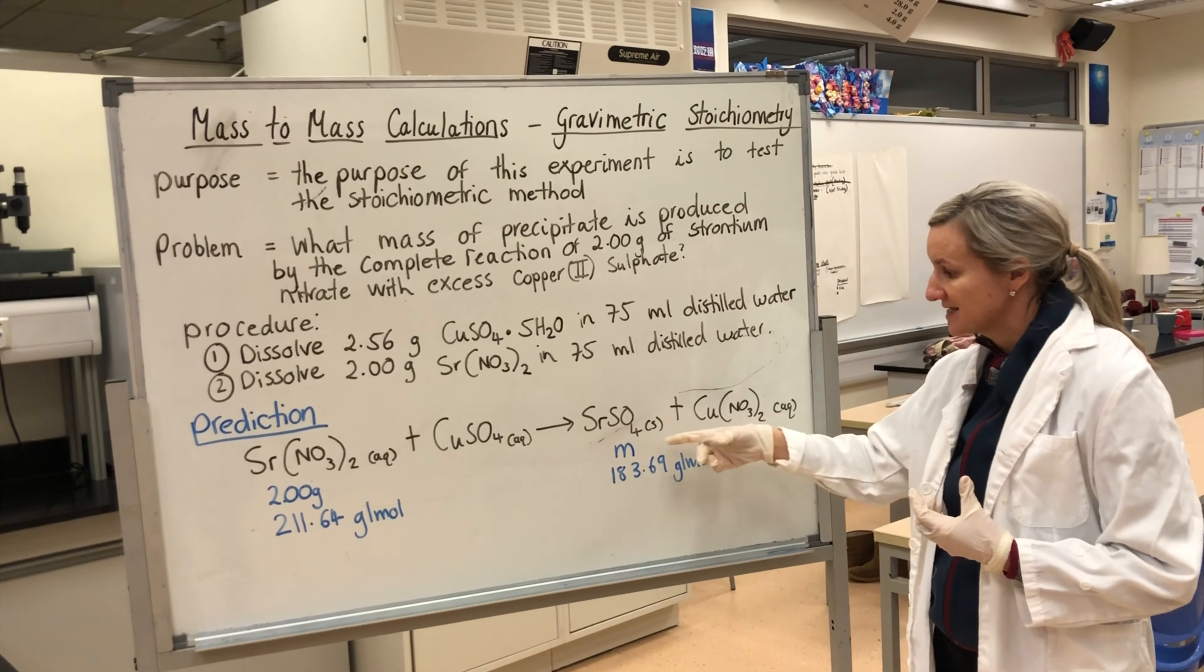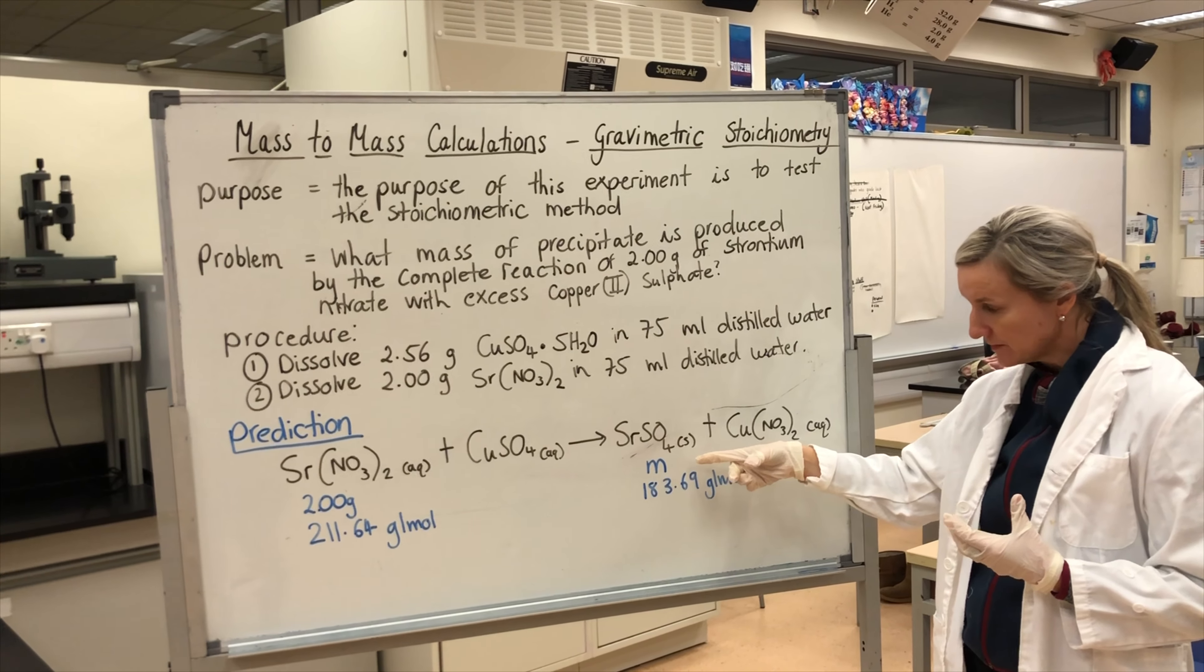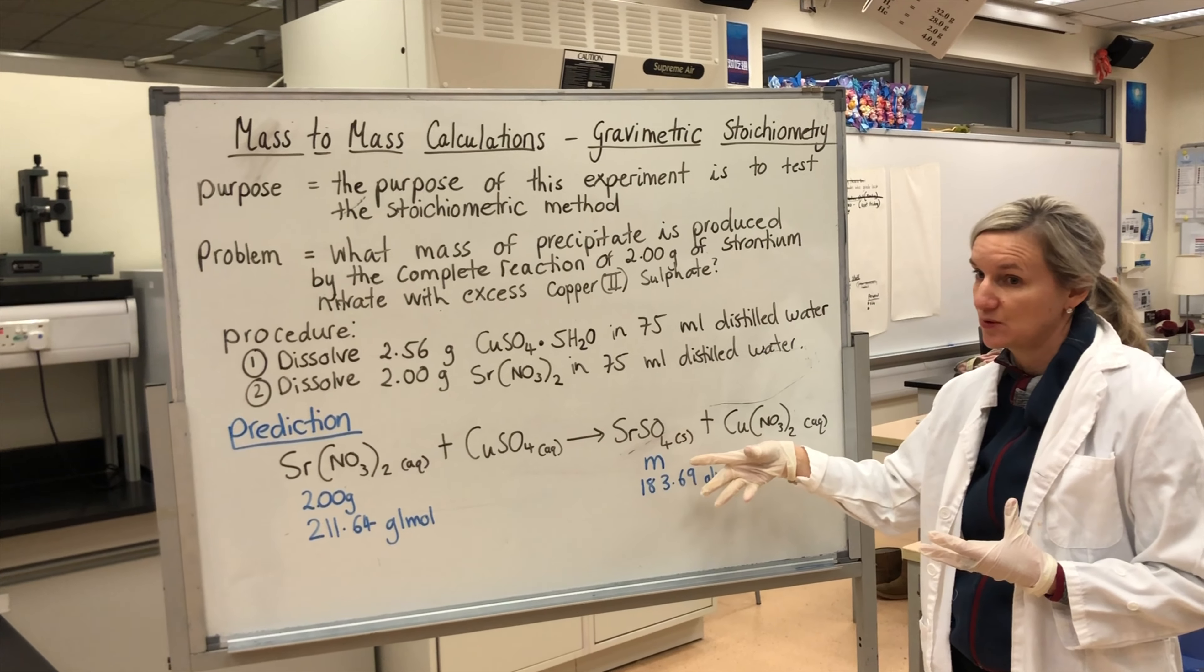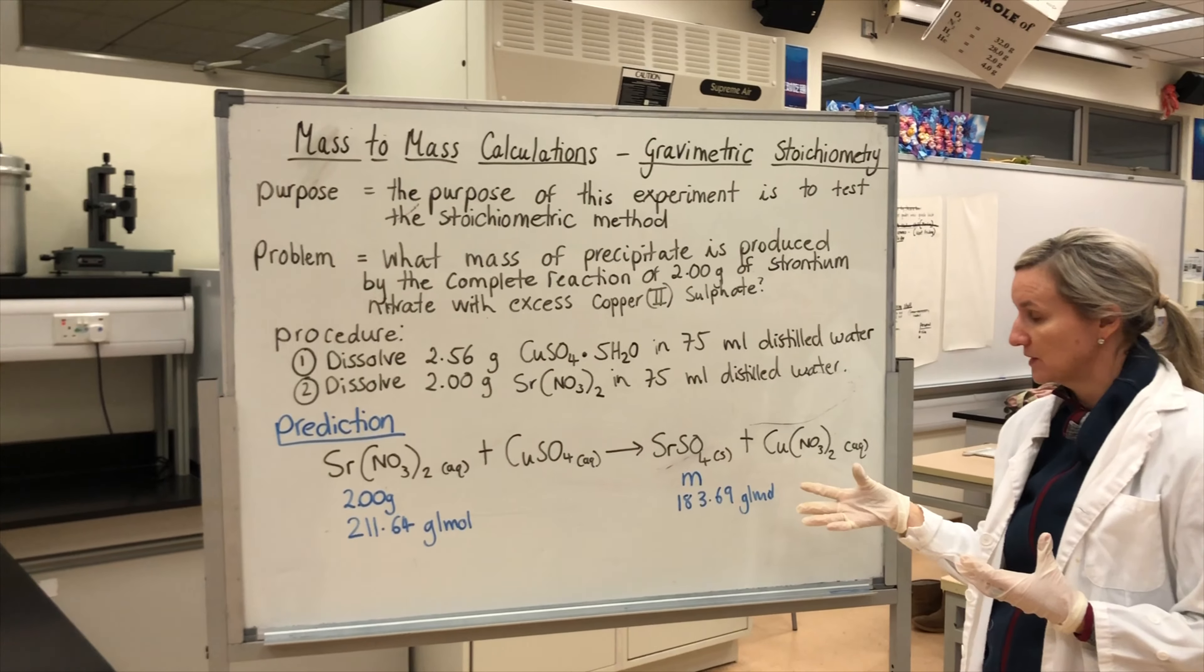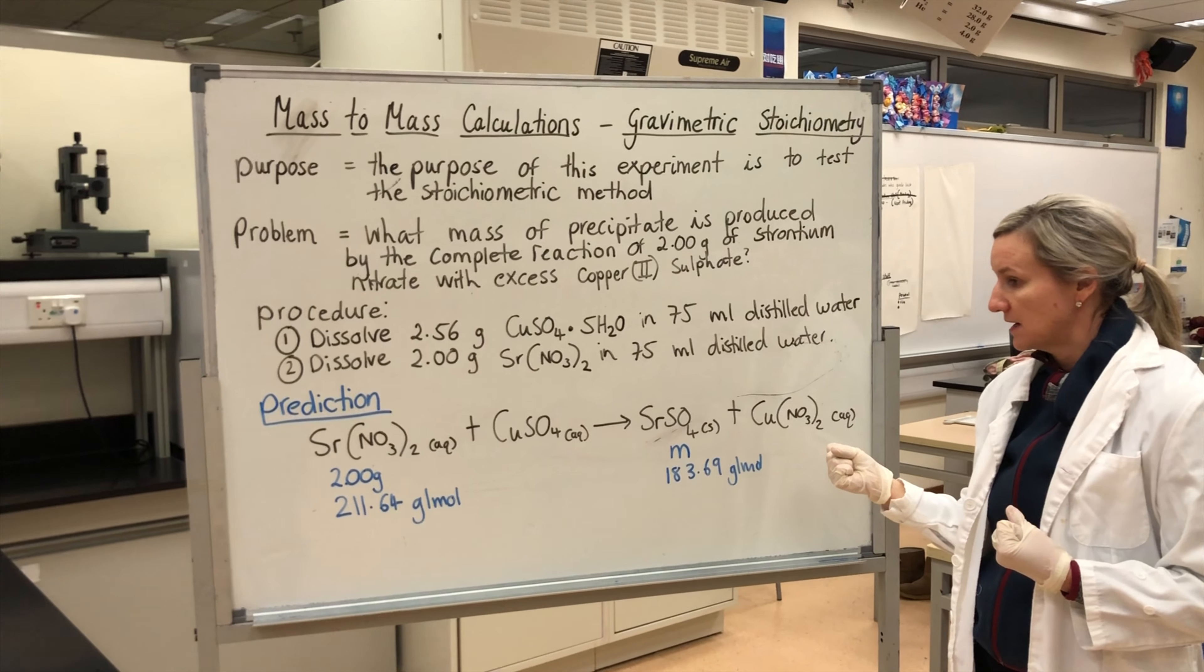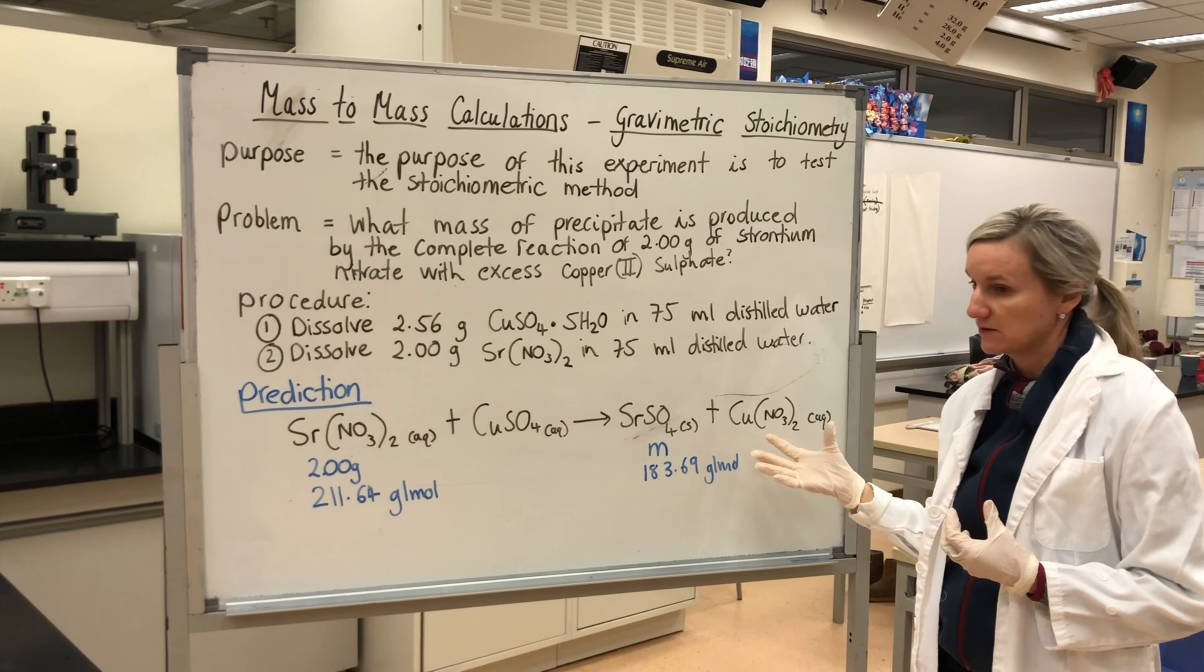Now we often can't get exactly the correct amount of mass that we predict in these equations because we lose part of our product through our experiment, and it kind of messes up with our results.